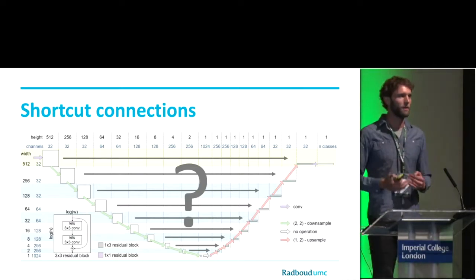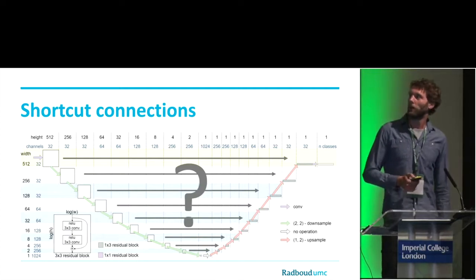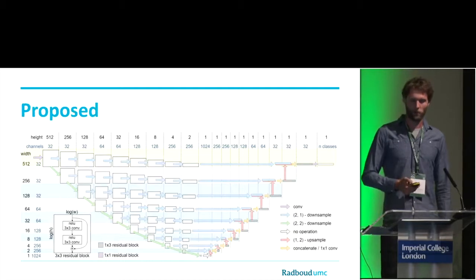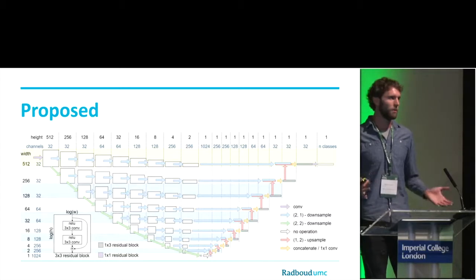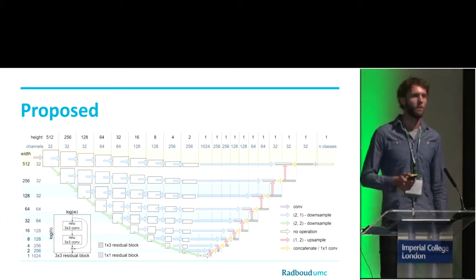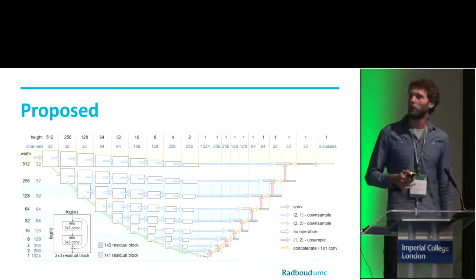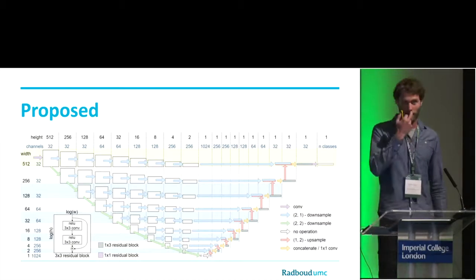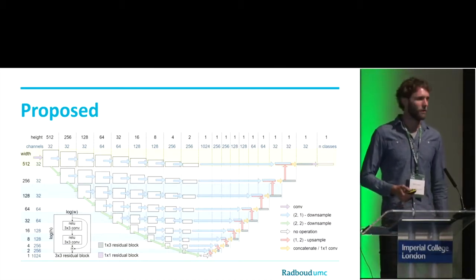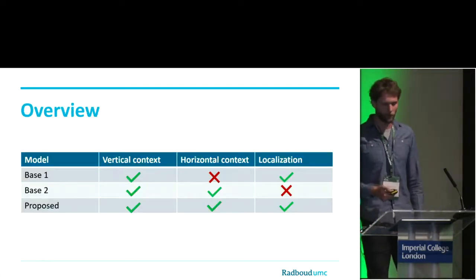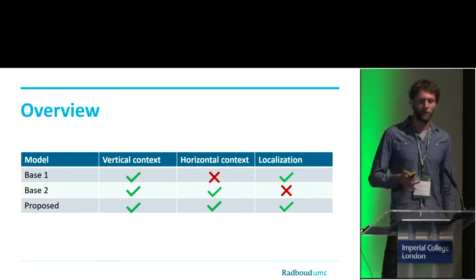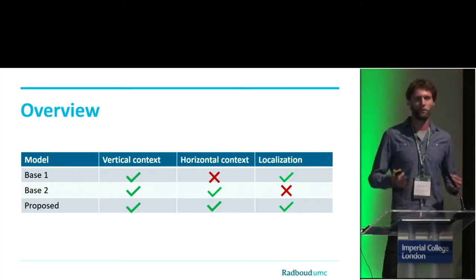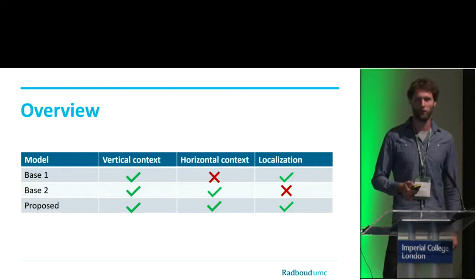To solve this problem and merge the two baseline approaches, we replace the shortcut connections with shortcut sub-networks. At every layer of resolution we apply a similar network architecture to the base-1 approach, which does the downsampling only in the vertical dimension. If we apply this at every layer, we obtain a feature map that can be concatenated. This should allow us to also include the context in the horizontal dimension. To summarize, we hypothesize three network architectures: base-1, which likely lacks horizontal context; base-2, which may have problems with accurate localization; and the proposed architecture, which merges the two for an efficient solution to the task of going from 2D to 1D.